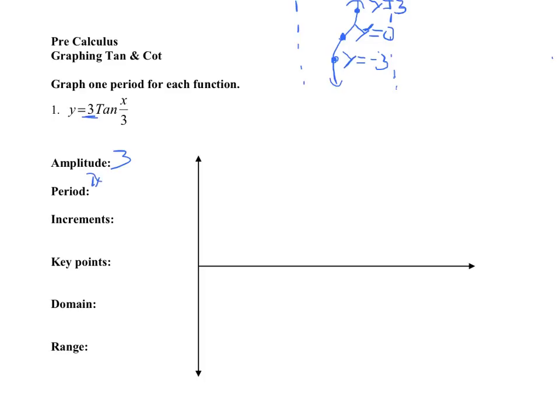So it's pi, the normal cycle for tangent, cotangent's pi. Pi divided by, now remember, this isn't just three, it's one-third. So if you divide by one-third, it seems to multiply it by three. So this is three pi.